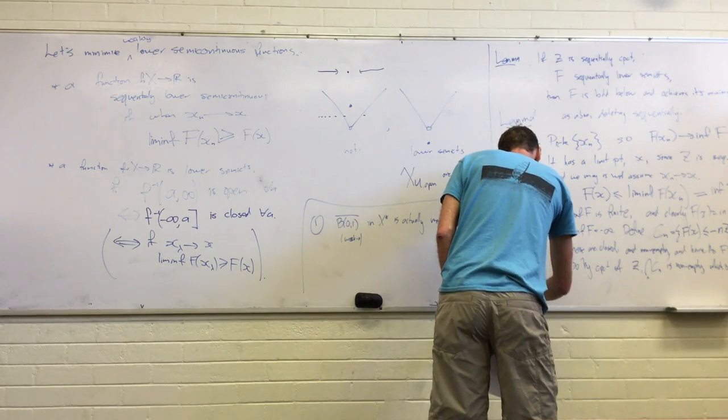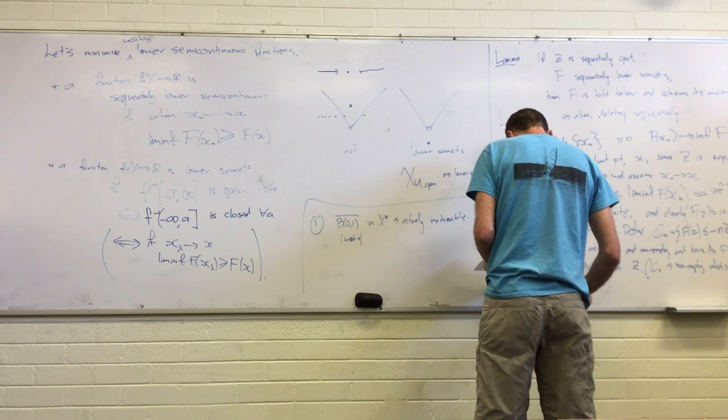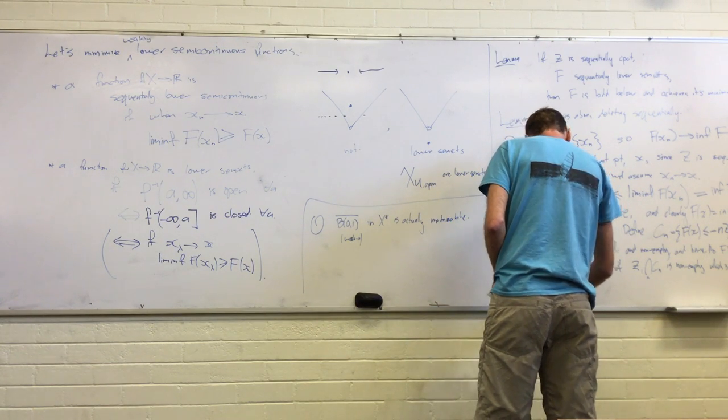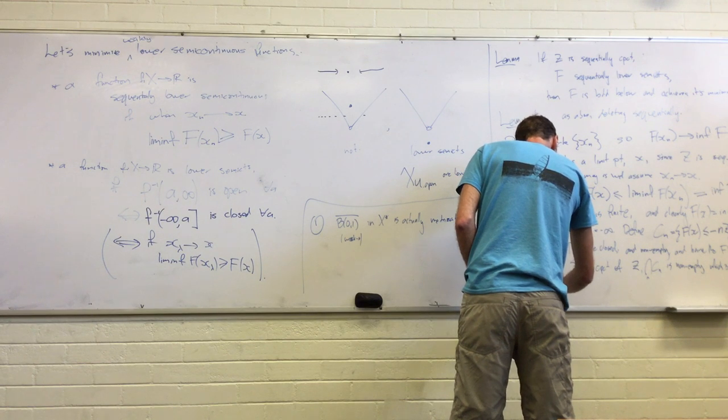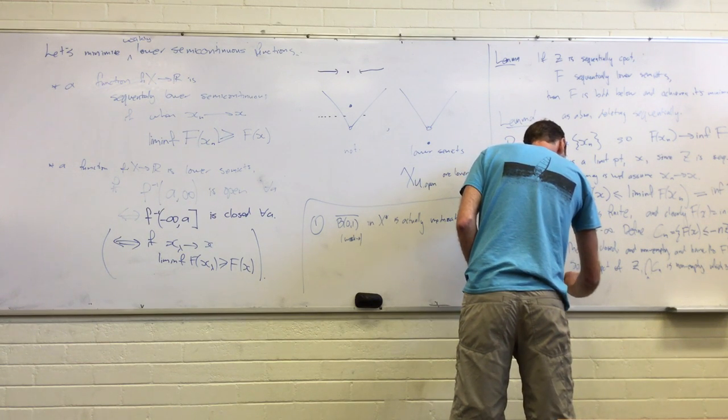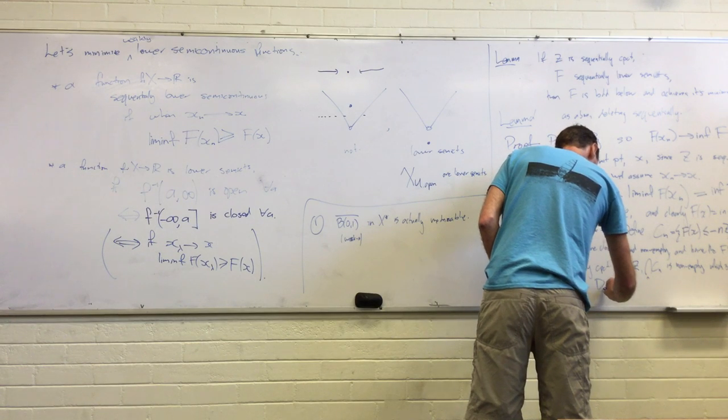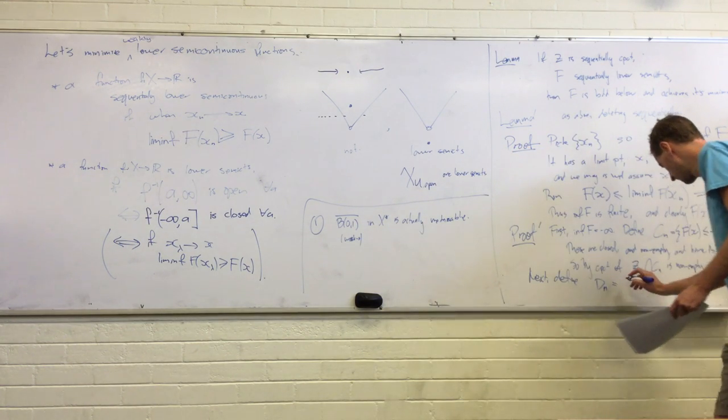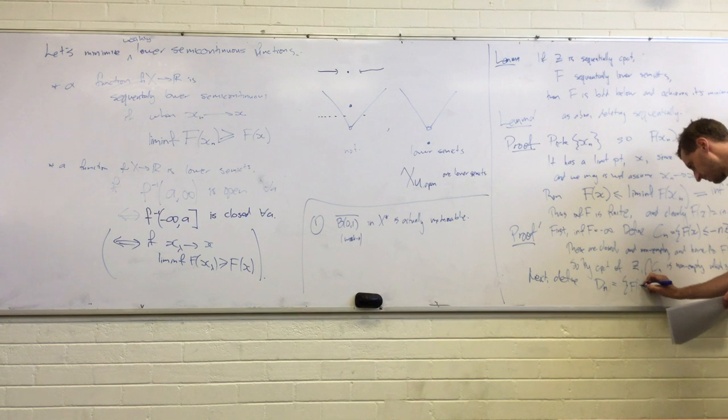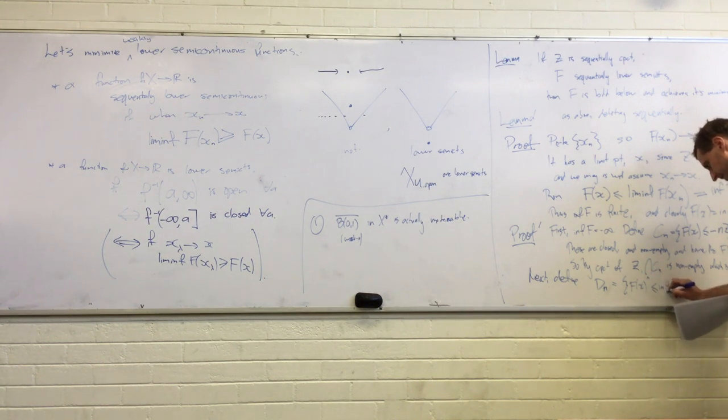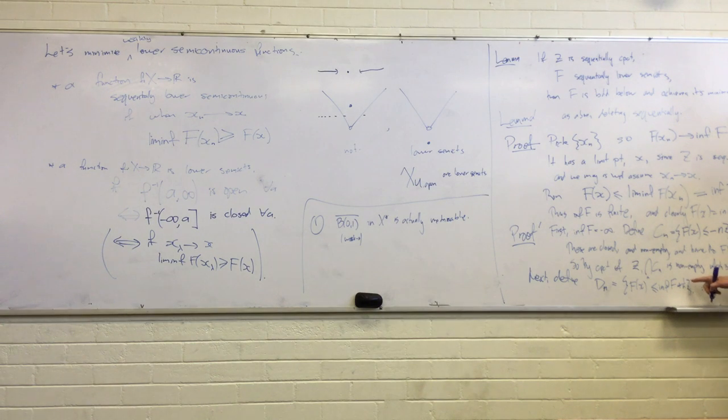Which is absurd. Because we're looking at functions to the real numbers. There's no real number less than every negative n. Okay. So we've ruled out that part. So now assume the infimum is finite. So let's define some other sets, Dn, to be all of the places where f(x) is at most the infimum of f plus 1 over n.